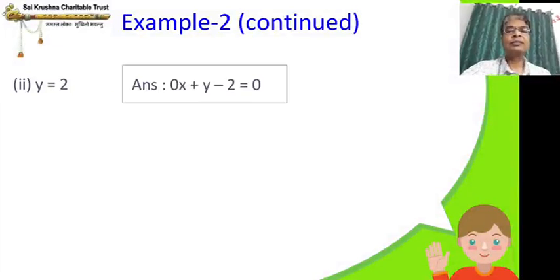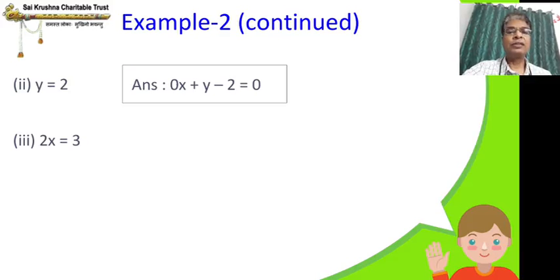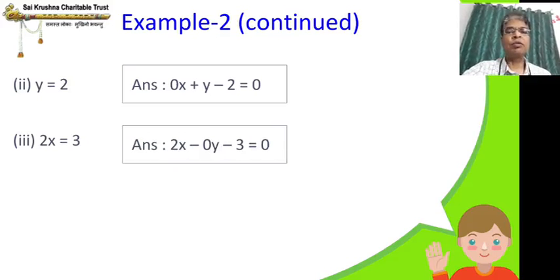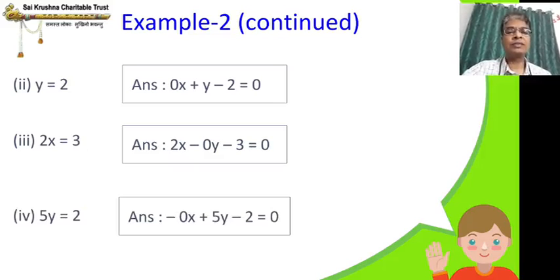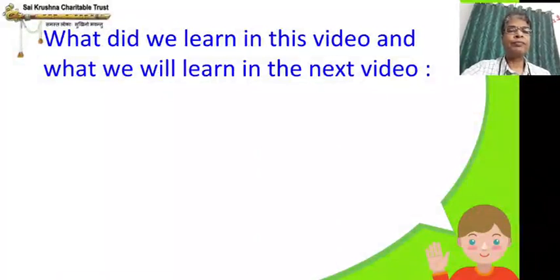For y = 2, the answer is: 0·x + y − 2 = 0. For 2x = 3: y is not there, so we put 0 before y — 2x − 0·y − 3 = 0. For 5y = 2: x is not there, so we put 0 before x — 0·x + 5y − 2 = 0. You can write +0x or −0x; both are correct, there is nothing wrong with either.